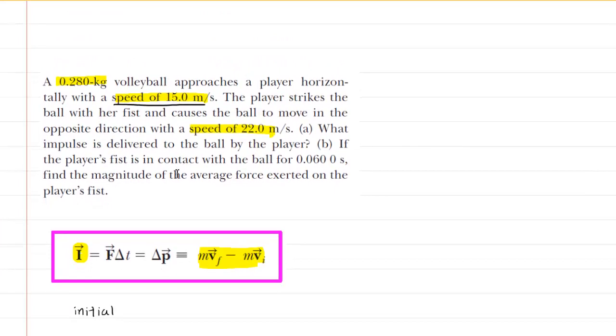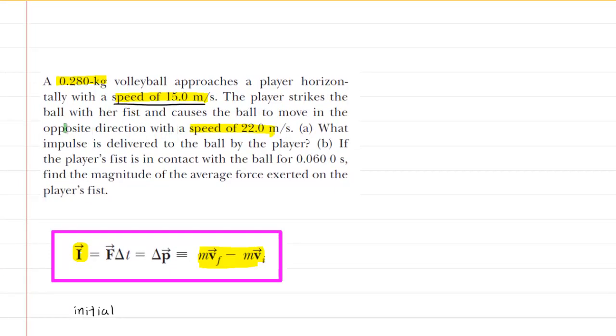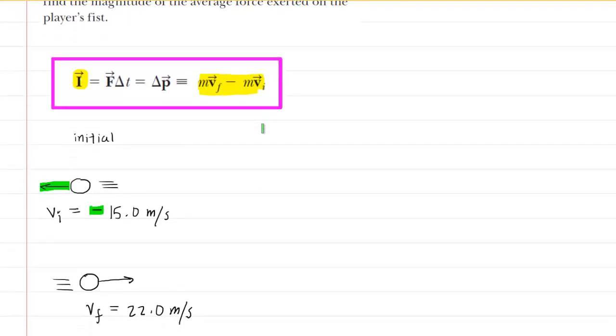The question tells us that the ball then ends up traveling in the opposite direction with a speed of 22 meters per second. Since it's traveling in the opposite direction after it has been hit, we now have the vector pointing to the right, the velocity vector that is.